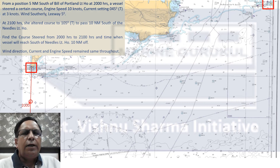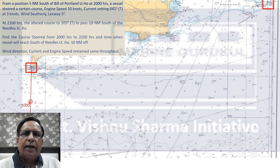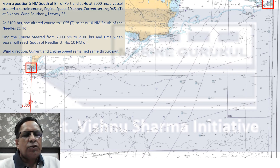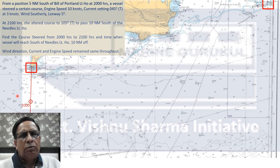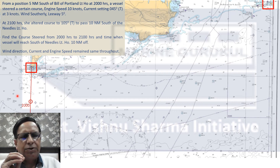From 2000 hours to 2100 hours, we know the wind experienced by the vessel, we know the current effect on the vessel, and we know the engine speed of the ship — but we do not know the course steered.